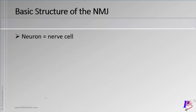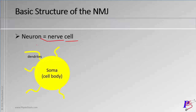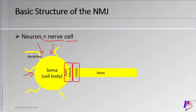Let's begin with a little bit of microanatomy. A neuron is a nerve cell. We're going to look at the soma, which is the cell body where you find the nucleus and ribosomes. From that you have the dendrites, where the impulse comes to the soma. Extending from there, you have the axon, which has different portions: the axon hillock, the initial segment where the action potential will begin, and then it propagates down to the end, which we call the axon terminal or the boutons.